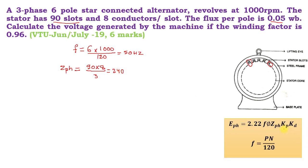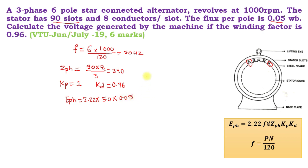Kp is the pitch factor. In this problem statement, no value of Kp is specified, so we assume Kp = 1. Whenever pitch factor data is not available, we assume Kp = 1. Kd is the distribution factor or winding factor. In this problem, the winding factor is given as 0.96. Now, EPH = 2.22 × f (50 Hz) × flux (0.05) × Kp (1) × Kd (0.96).